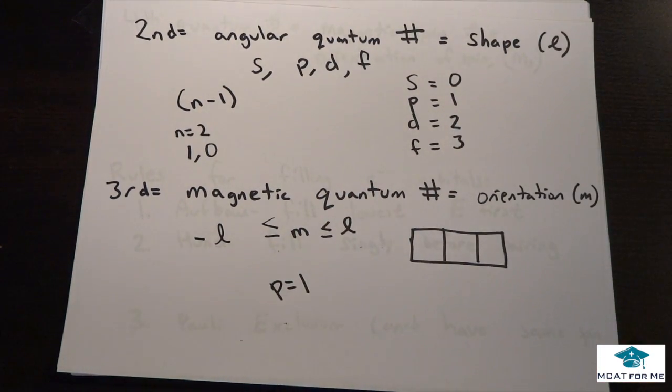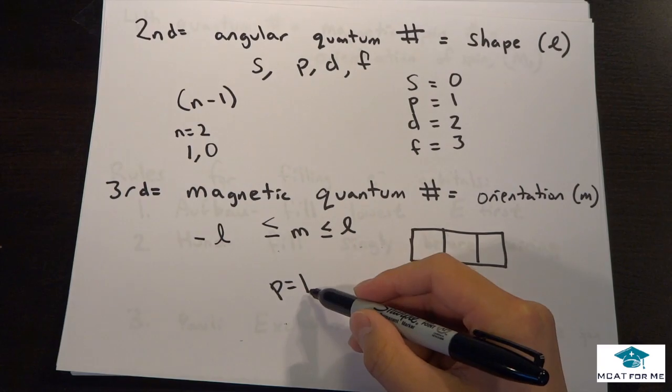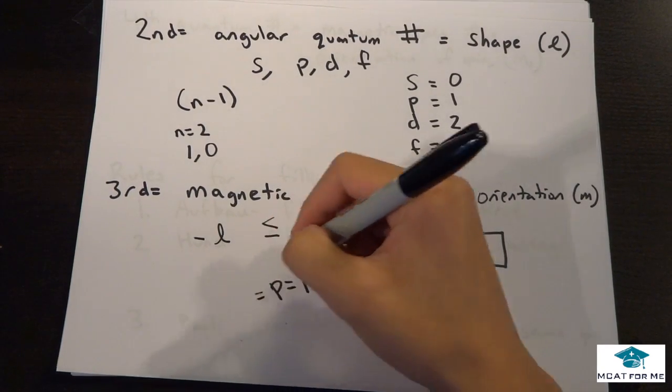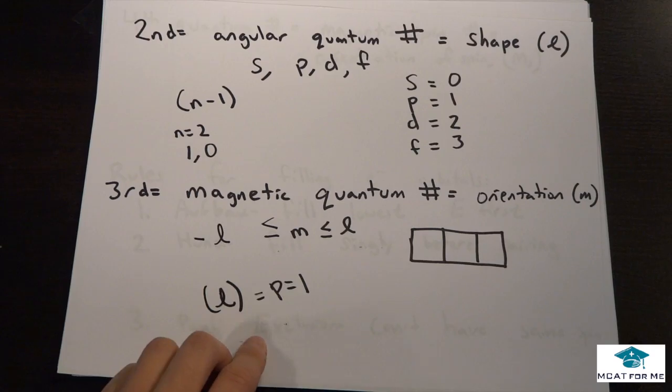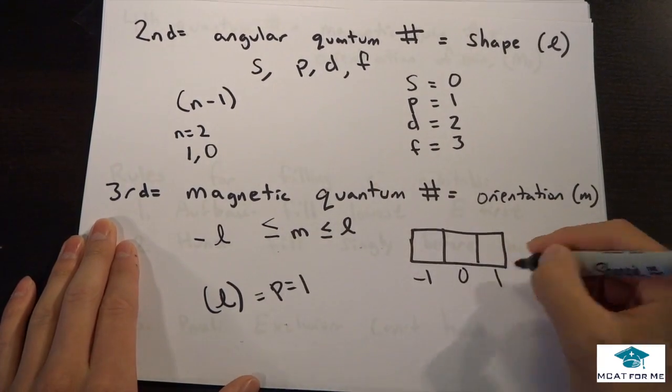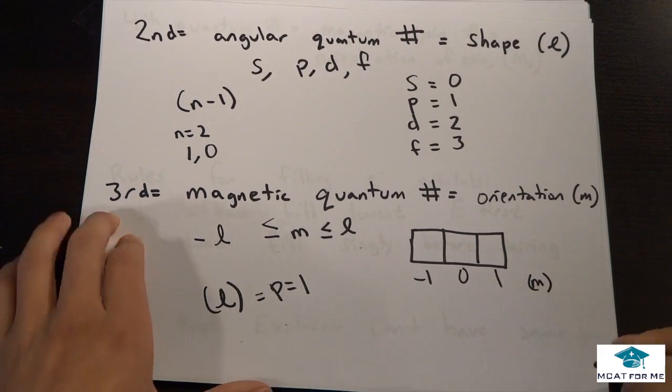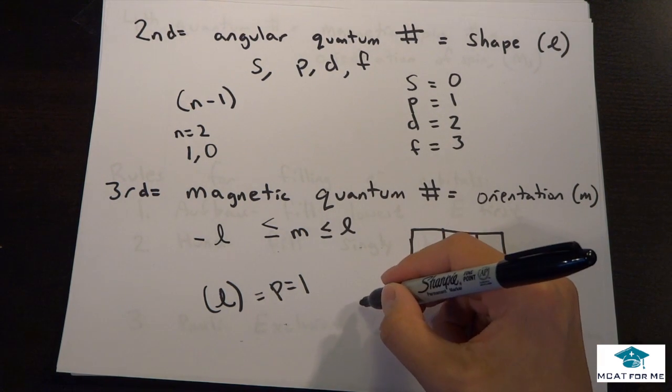And so now we have to try to find what the magnetic quantum number is. Well, it can either be negative L, which is 1. So this was our L quantum number, our secondary quantum number. So it could be negative 1. It could also be 0, because that's within that range. And 1. And this would be our M. And so that means that we could have these three different types within the P orbital.